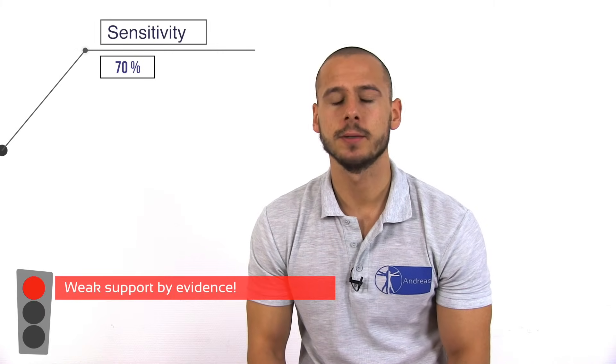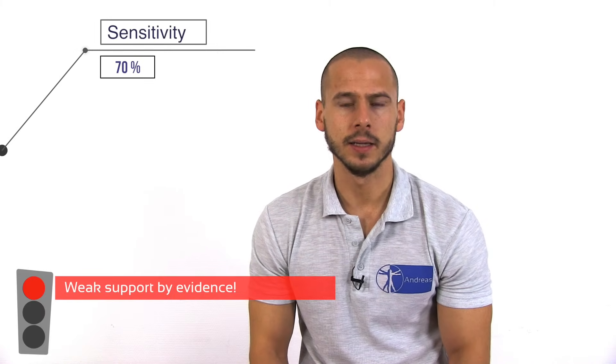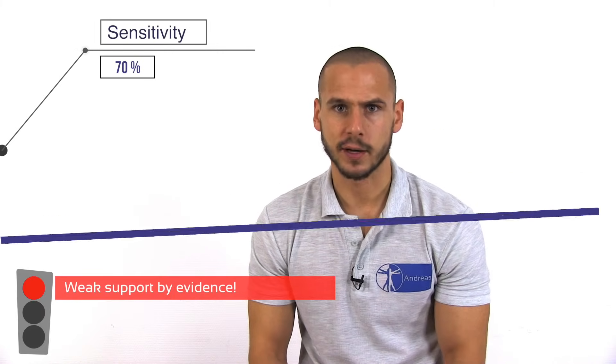The CHEMS test, which is also referred to as the quadrant test or extension quadrant, is designed to recreate this narrowing. Furthermore, it puts maximal stress on the facet joints. It has a reported sensitivity of 70% as reported by Lyle et al. in 2005.